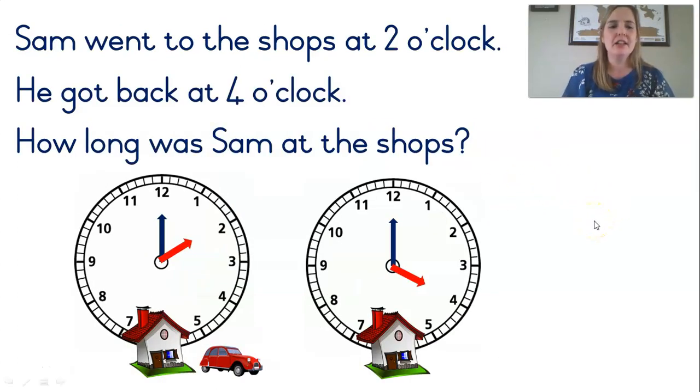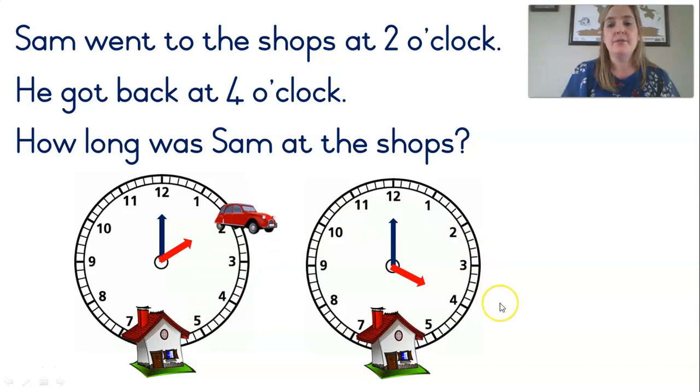Now, let's move on to our last thing to solve for today. It's a word problem, a story sum. And we are going to do a story sum all about time. And we've got some pictures to help us. So, I'll read to you. You can follow along if you can. Sam went to the shops at 2 o'clock. He got back at 4 o'clock. How long was Sam at the shops? So, we know that Sam went to the shops. We don't know how long. But we are told that he left his house at 2 o'clock. And he only got back at 4 o'clock. He was at the shops for quite a while. I hope he was wearing his mask.